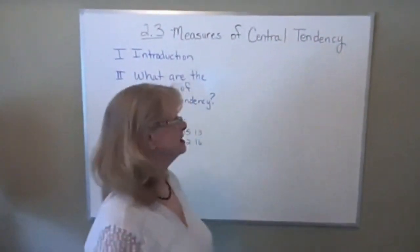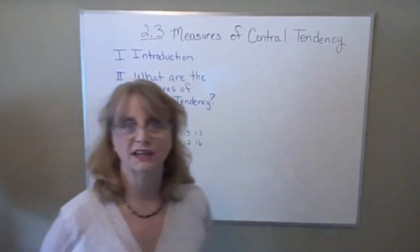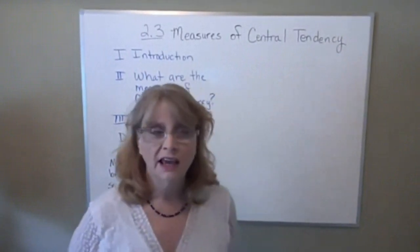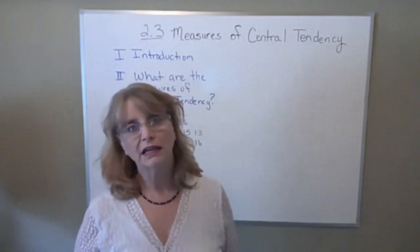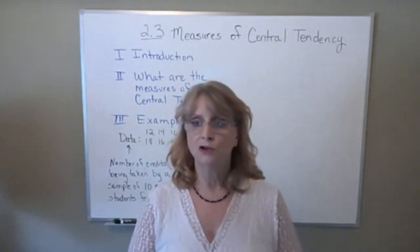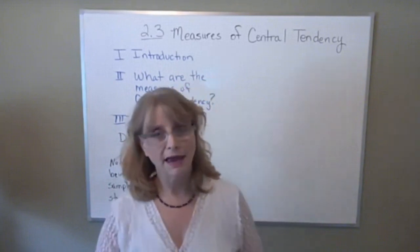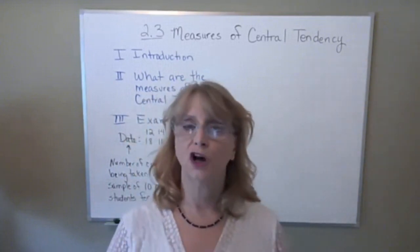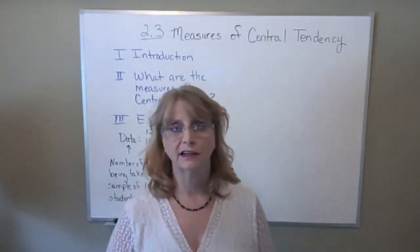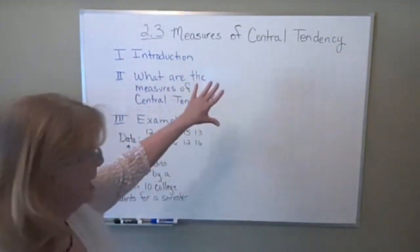Hello, this lesson today is from section 2.3 in our statistics textbook titled Measures of Central Tendency. From previous sections in this chapter, you may recall we've gone over some definitions, including the difference between something you look at for a population versus a sample. A measure for a population is called a parameter, and if you're looking at a measure from a sample, it's called a statistic. We're going to be looking at both of those within this type of measure.